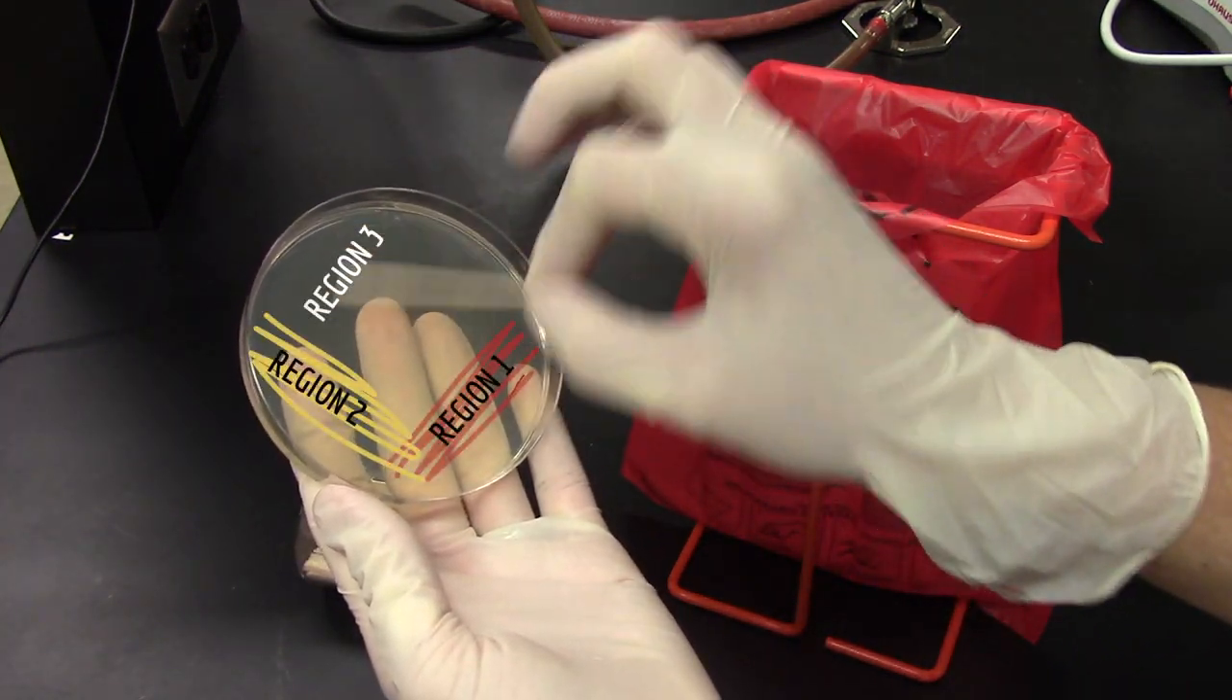Streak your first toothpick onto just a portion of the plate. Discard that toothpick and get a new sterile one. Now, streak from the region you just covered into a new portion of the plate. Make sure you streak over the previous streaks and into a fresh part of the plate. Repeat once more.